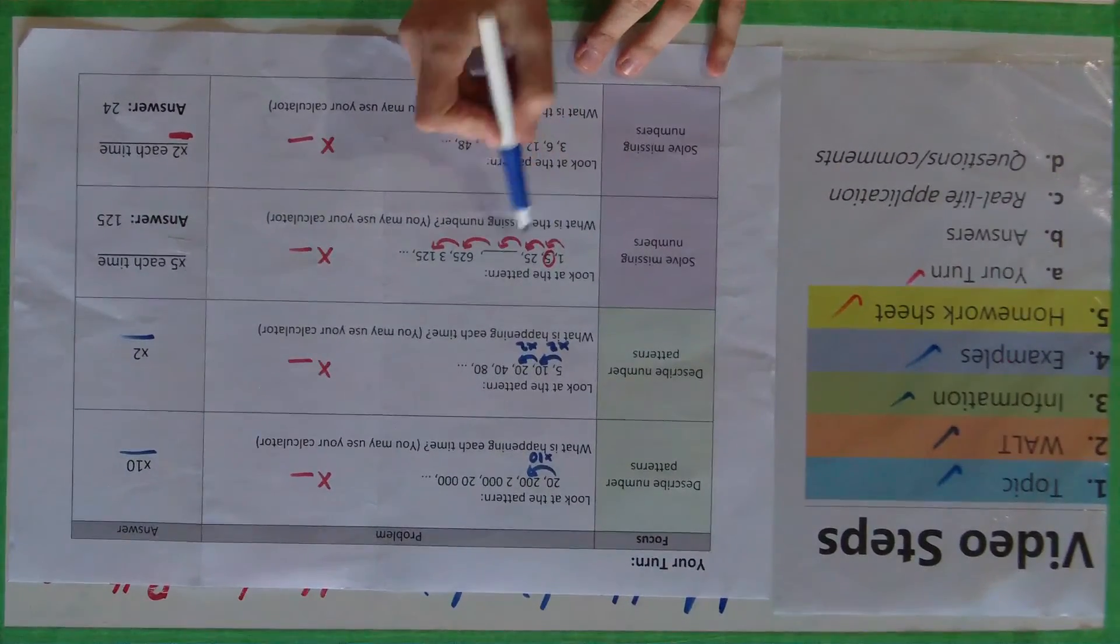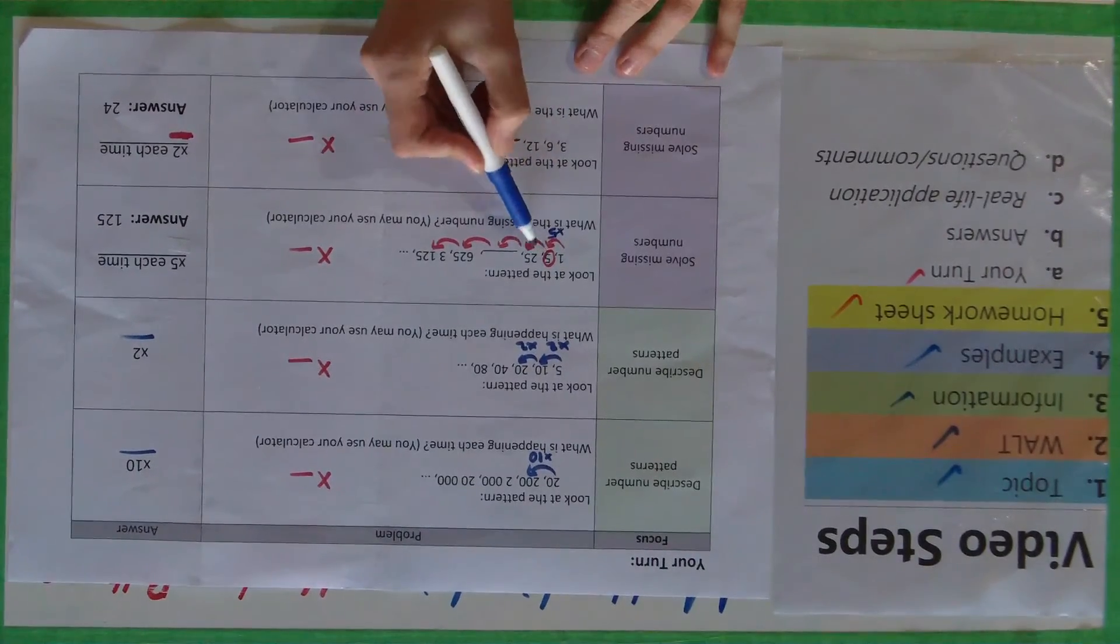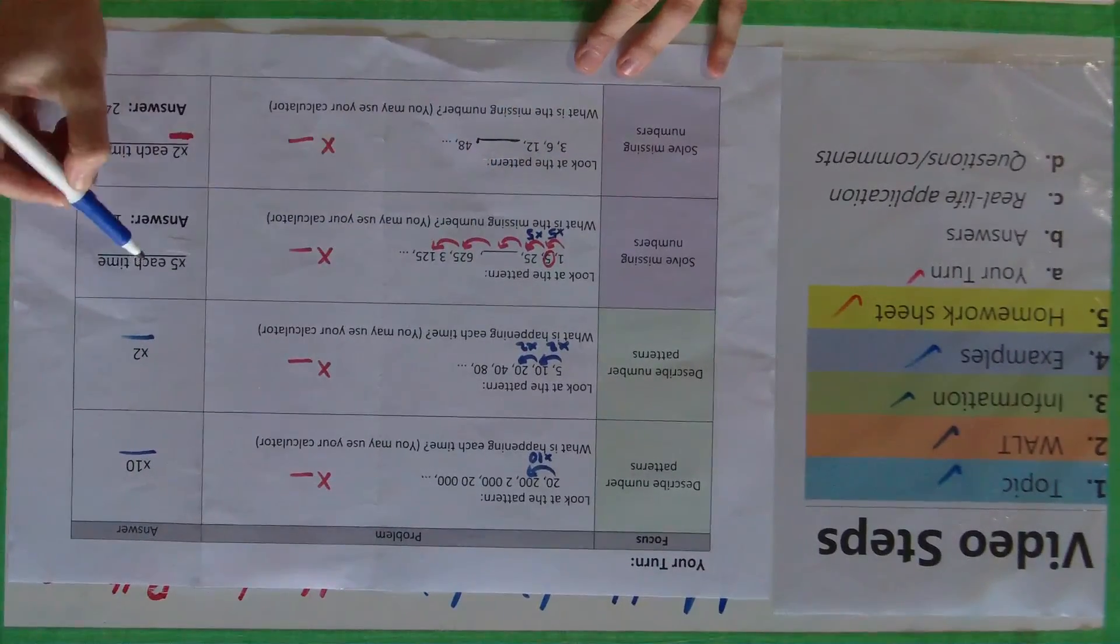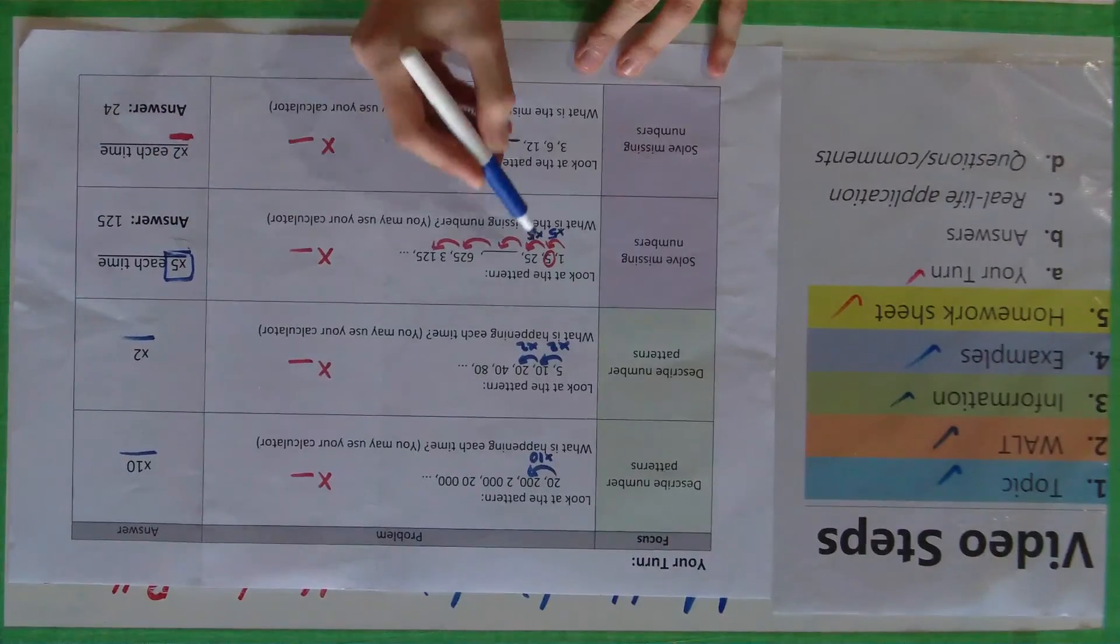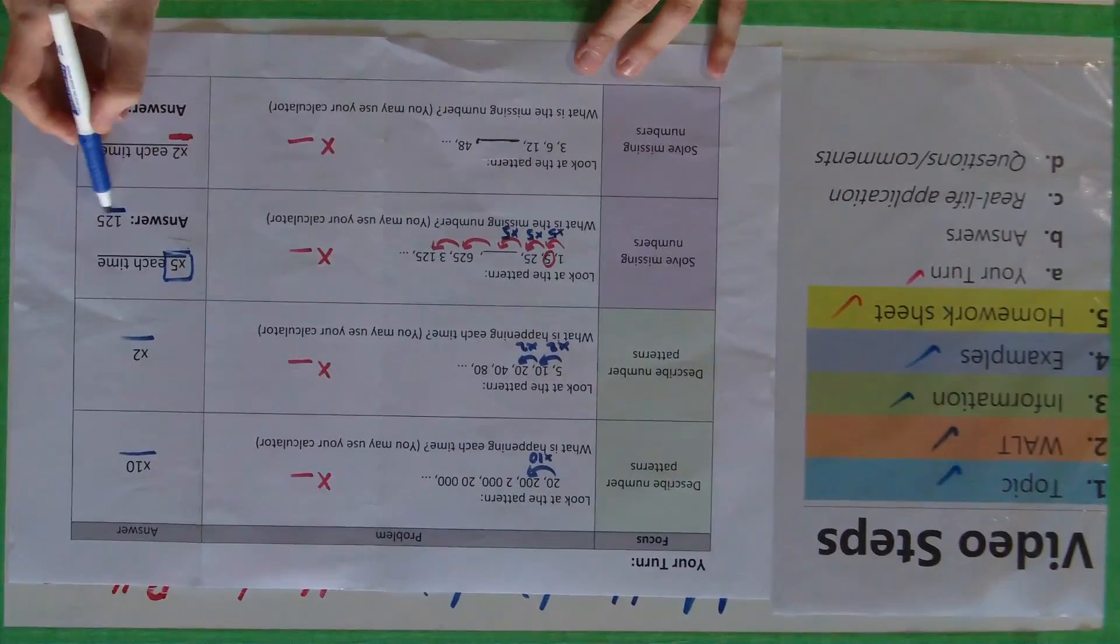Then for here, look at the pattern, what's the missing number? I know that 1 times 5 is 5, 5 times 5 is 25, so it's a times by 5 pattern. And the missing number would be 25 times 5, and the answer is 125.